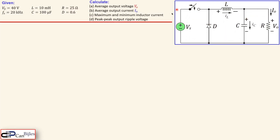This circuit is the very general generic circuit of a buck converter in a very simple case. You see here the DC input voltage, we have a switch here which is ideal, we have the diode, the inductor, and the capacitor, and our load here in pure resistor form. The Vo is our output voltage and Io is our output current.